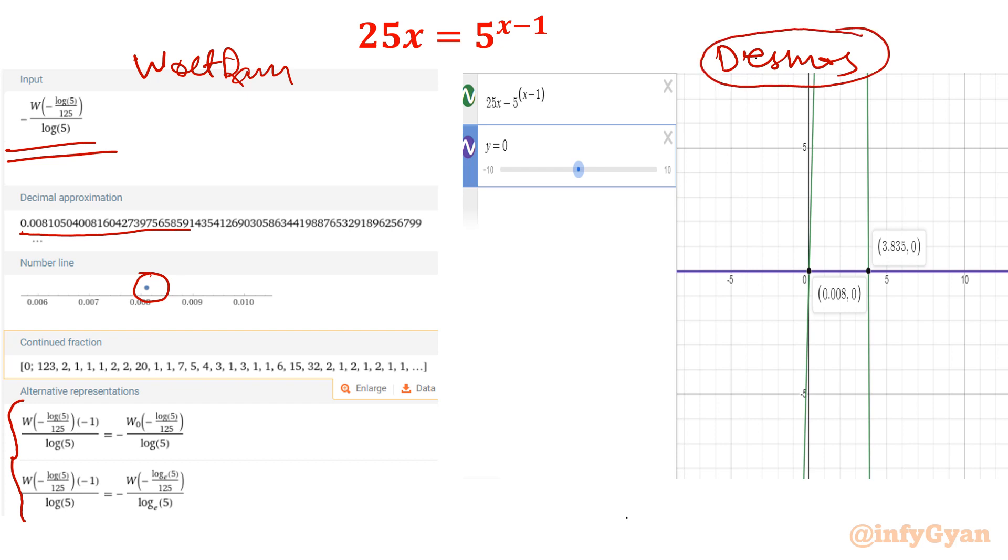If you will check Desmos, then that graph is showing. See I have plotted 25x minus 5 power x minus 1. And see right hand side is 0. I will take both the terms to the left. Then it would be 25x minus 5 power x minus 1 equal to 0. So this is your y equal to 0. And this green color graph is 25x minus 5 power x minus 1. It is intersecting x axis at two places. One is 3.835. And second one is our answer which we calculated using Lambert W. 0.00806. This value is coming out.